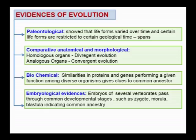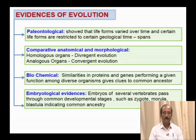Homologous organs are organs with similar structure and origin but different function. Analogous organs are organs with different structure and origin but perform a similar function. Analogous organs explain convergent evolution.